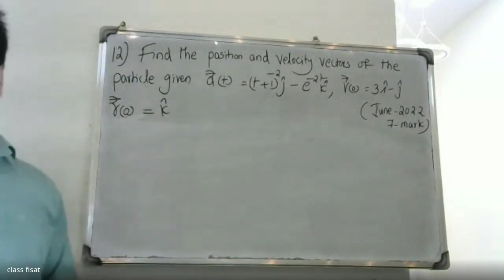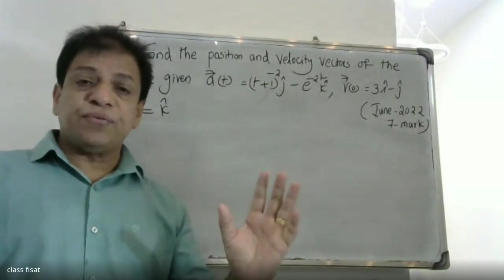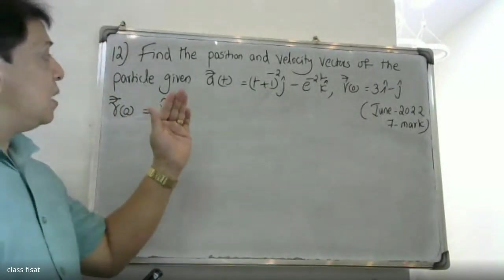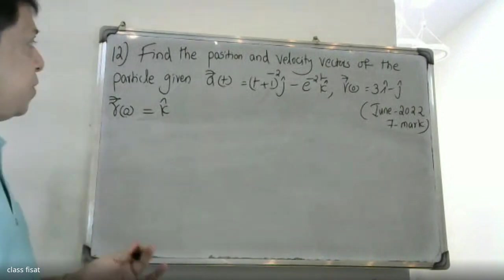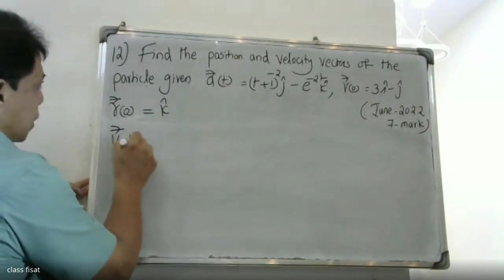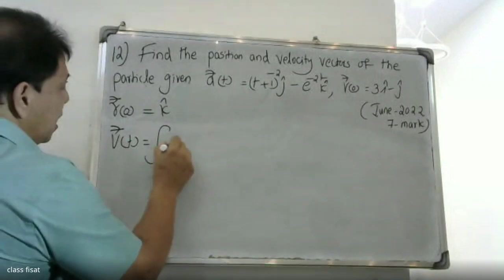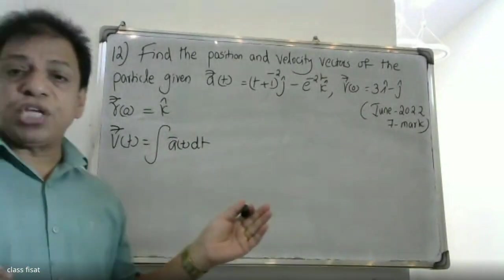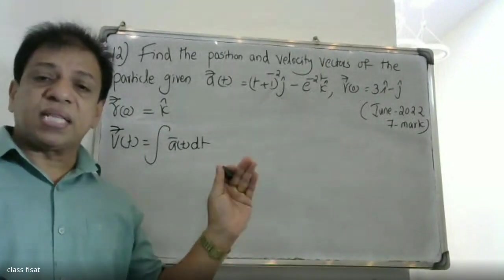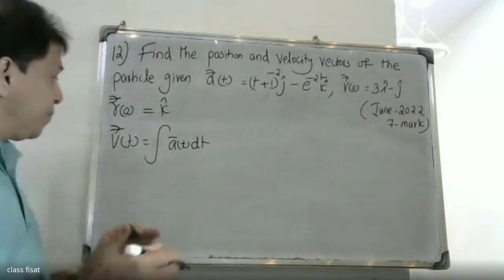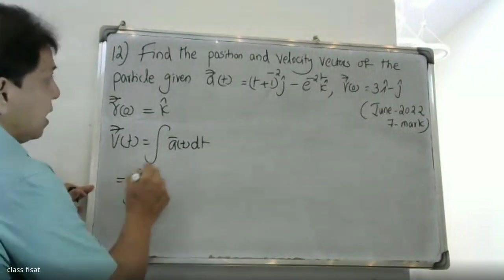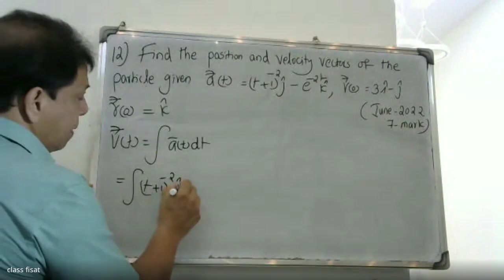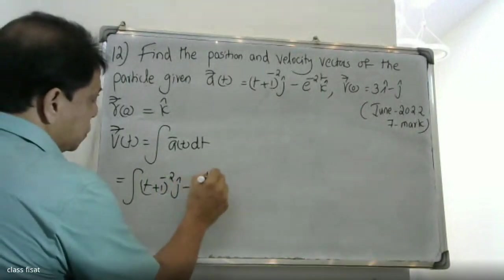We will see the acceleration. The velocity vector is obtained from the acceleration — the velocity vector is the integral of a of t with respect to t. The acceleration is a of t: t plus 1 raised to minus 2 into j, minus e raised to minus 2t into k.